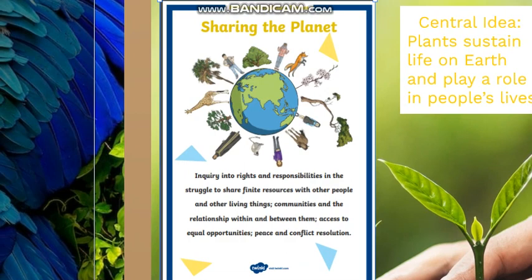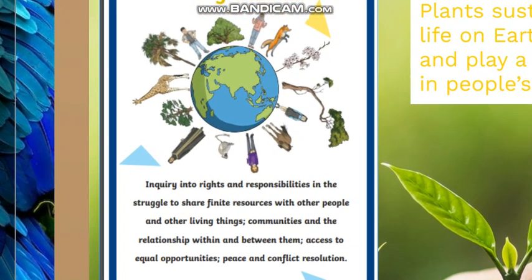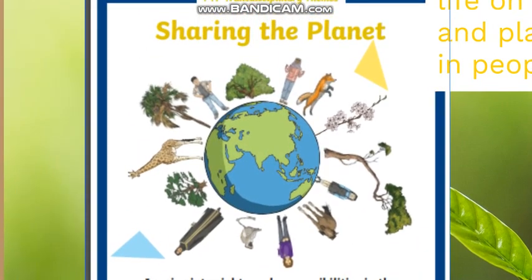We need to think of communities and the relationship within and between them, access to equal opportunities, peace, and conflict resolutions. In this theme, we are going to talk about Planet Earth and how we share all the resources on our planet. As you can see in this picture, there are a lot of living things on this planet — people or human beings, animals, and plants — and all of them need to live equally on this planet and share it together, with resources distributed evenly so that they all can survive.